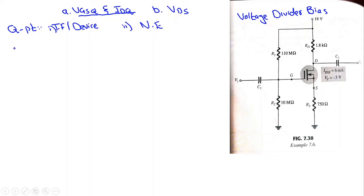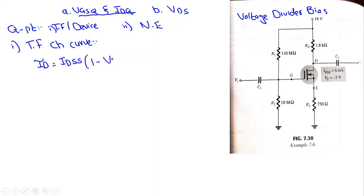First, let us draw the transfer characteristic or device characteristic curve. The transfer characteristics are given by the Shockley equation: ID = IDSS × (1 − VGS/VP)². To draw the transfer characteristics for the N-channel depletion type MOSFET, we need four points. The first familiar point is when VGS = 0V, ID = IDSS.